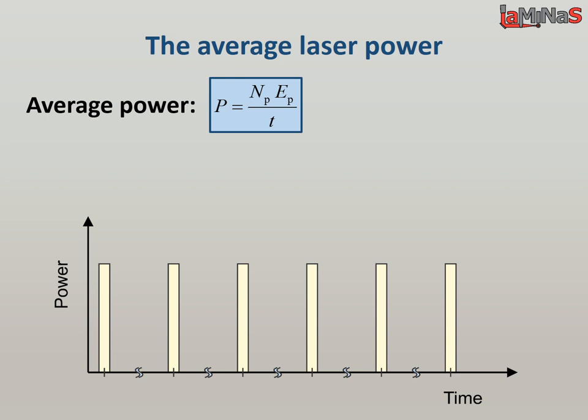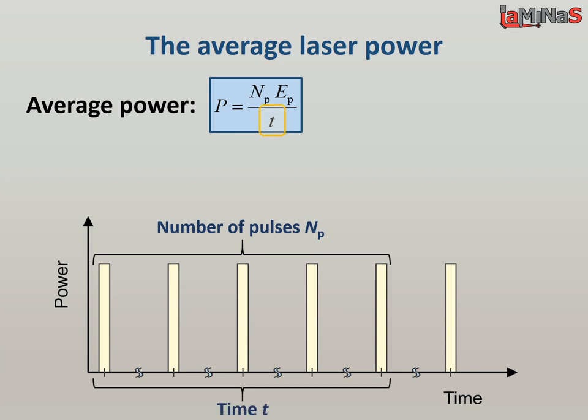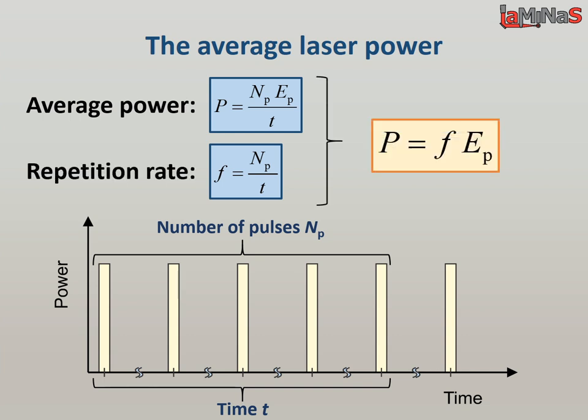The average laser power is defined as the product of the number of pulses and the pulse energy, divided by time needed to irradiate this number of pulses. Since the ratio between the number of pulses and time equals the repetition rate, the average power is simply repetition rate times pulse energy.